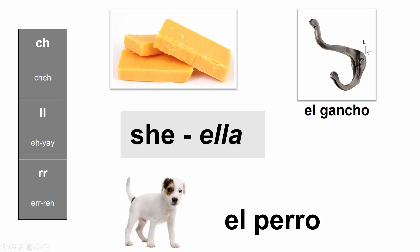The C and the H pronounced together have this CHE sound — like cheddar cheese. A word in Spanish is 'el gancho,' the hook you might hang your hat on. We have the double L, pronounced EYE, which in English would be — the word is 'she,' but in Spanish it would be 'ella.' And then the double R — the infamous rolling of the R's. 'El perro,' for example, means the dog.